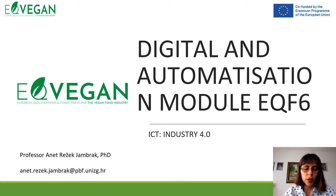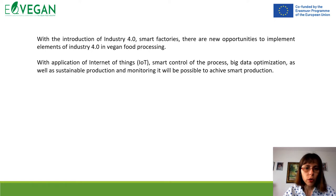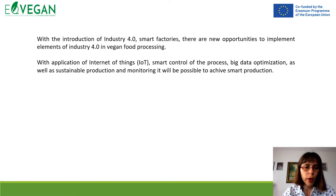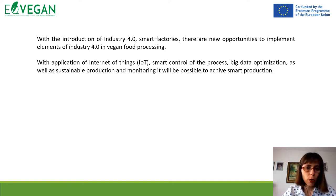This is a presentation regarding the digitalization and automatization module and ICT Industry 4.0. With the introduction of Industry 4.0 Smart Factories, we have great new opportunities to implement elements of Industry 4.0 in vegan food processing. With the application of Internet of Things, smart control of the process, big data optimization, and sustainable processing and monitoring, it is possible to achieve smart production.